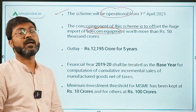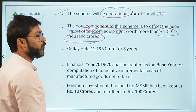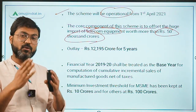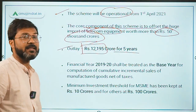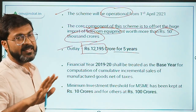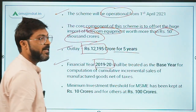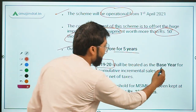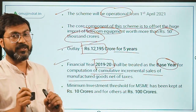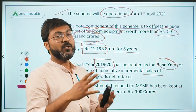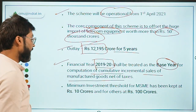The import of telecom equipment is worth more than 50,000 crore rupees, and reducing this is the core objective of the PLI scheme. The total outlay for this scheme is 12,195 crores for a period of five years. The financial year 2019-20 will be treated as the base year for computation of cumulative incremental sales of manufactured goods.